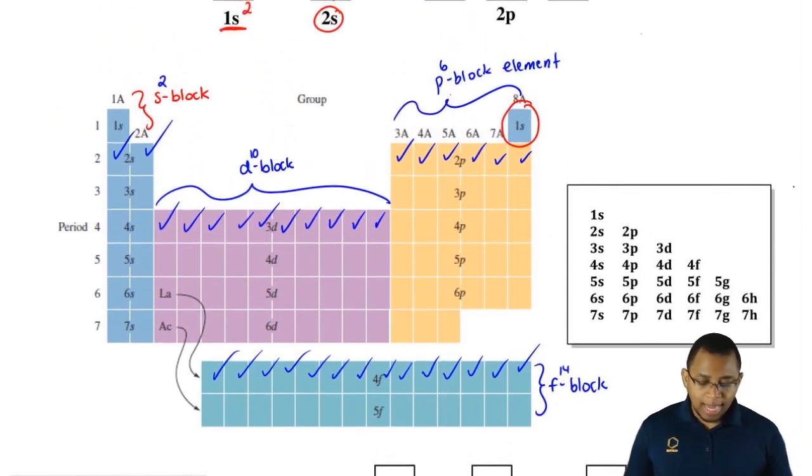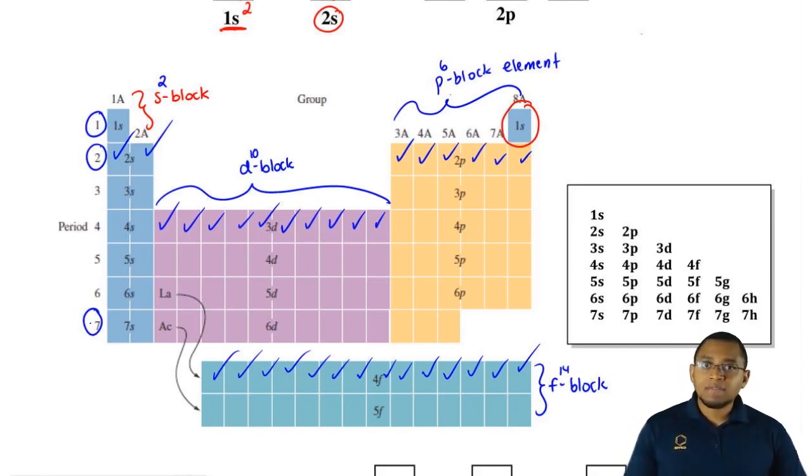Also what you should realize here is that the periods, remember this is period 1, period 2, all the way to period 7. The period number reflects the shell number. So we have seven periods as of now, so we have seven shells as of now for our biggest elements.